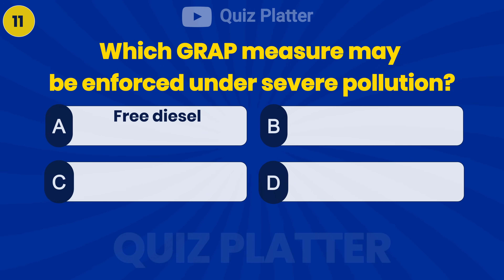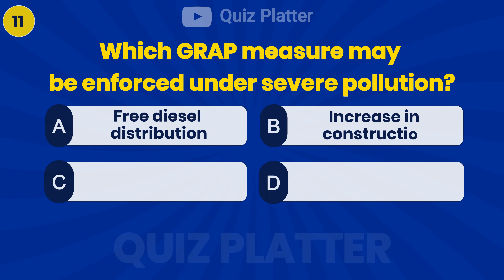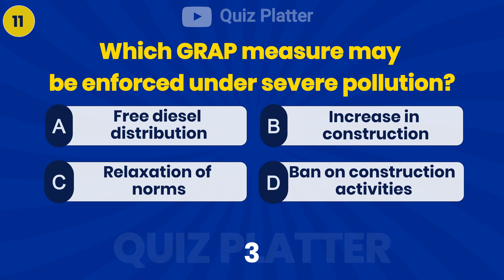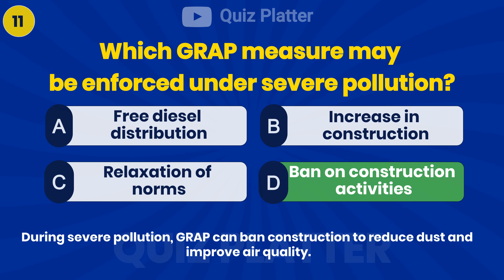Which GRAP measure may be enforced under severe pollution? Answer: D — Ban on construction activities.